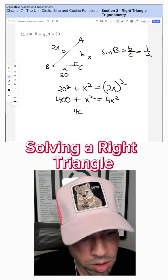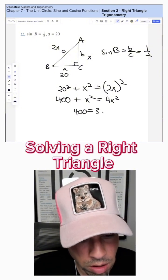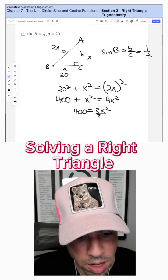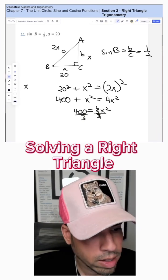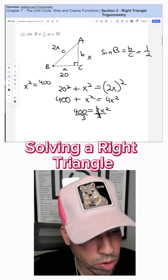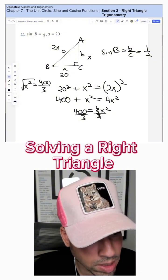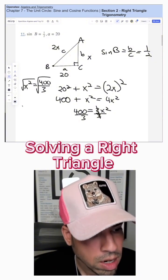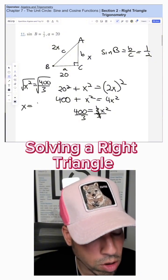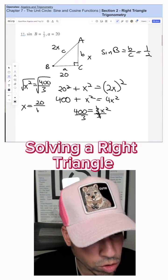Now I'm going to subtract X squared from both sides. I get 400 equals 3X squared. Then I'm going to divide both sides by 3, and X squared equals 400 over 3. Last but not least, I'm going to take the square root of both sides, and X equals 20 over the square root of 3.